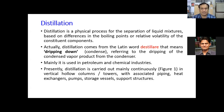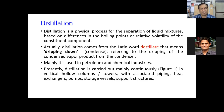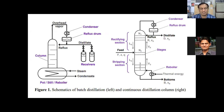The word 'distillation' comes from the Latin word 'destilier,' meaning dripping down — referring to condensation, where vapors convert to liquid. It is mainly used in petroleum and chemical industries. Conventional techniques consist of vertical hollow columns or towers, with different types of heat exchangers, pumps, storage vessels, support structures, and pipe assemblies. From this schematic of batch and continuous distillation, you can understand that small or medium scale industries use batch distillation, while large scale industries use continuous distillation.